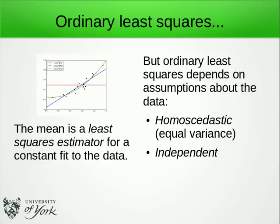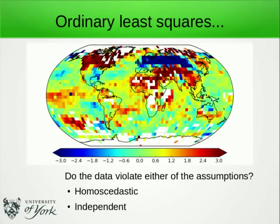However, ordinary least squares depends on some assumptions: that the data are homoscedastic — that is, they have equal variance — and that they are independent or uncorrelated. Are these assumptions true of temperature data? Looking at temperature data, it's probably hard to judge homoscedasticity, but we can see that they are not independent. If we have an observation that's cold, it's much more likely that neighbouring observations will also be cold, and similarly for hot data.